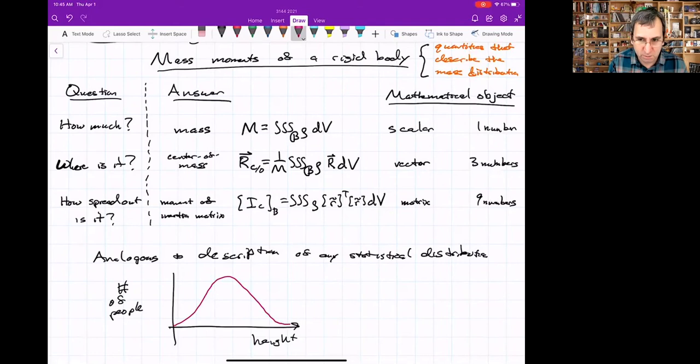Let me draw a distribution. How much would be the total number of people? If you want to know where is it, that would be kind of like the mean or the average. If you want to know how spread out is it, that's measured by standard deviation. And in statistics, these are referred to as the zeroth moment, first moment, and second moment.